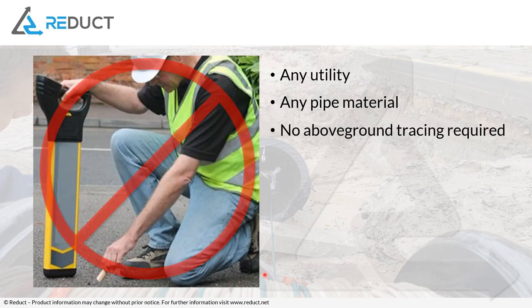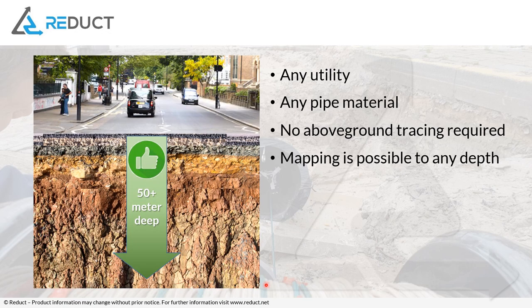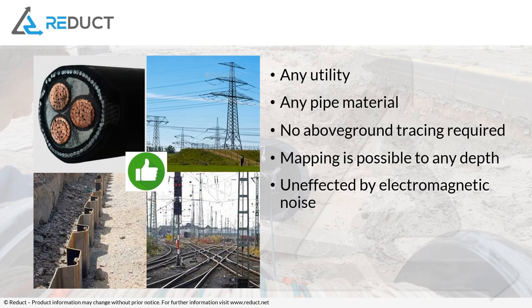Very importantly, as I mentioned before, we only need the entry and the exit coordinates as references to the real world. We don't need to trace the tool as it travels from A to B. That's an advantage because you can go to any depth, as long as you know where it goes in and where it comes out. You can use it next to electromagnetic noise sources — generators, power cables, train tracks, steel plating — anything that would normally interfere with traditional locating technologies. Inertial navigation doesn't have that issue.